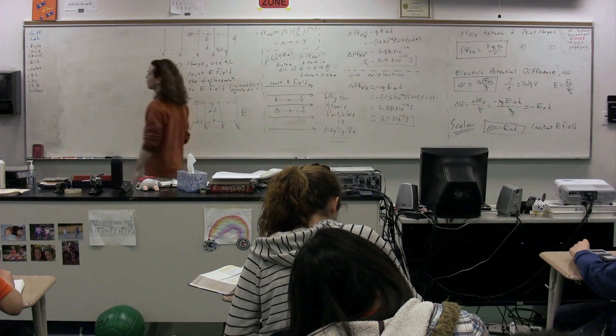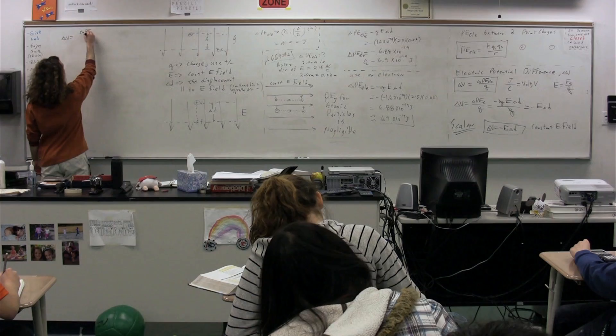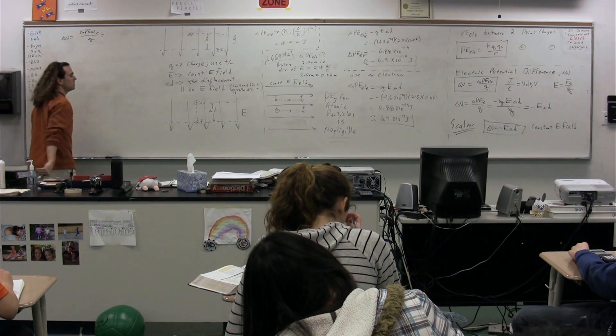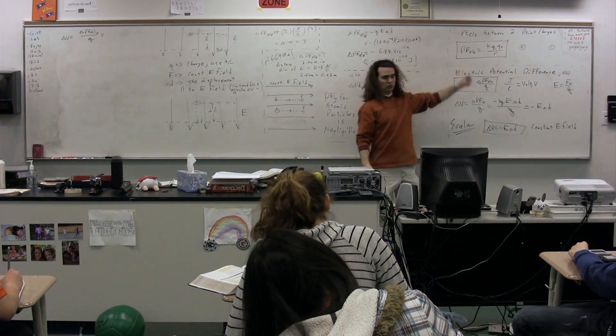So we start again with the equation for the electric potential difference, the general one, which is equal to the change in electric potential energy per unit charge. And we're going to substitute in this equation in order to get there, for two-point charges.